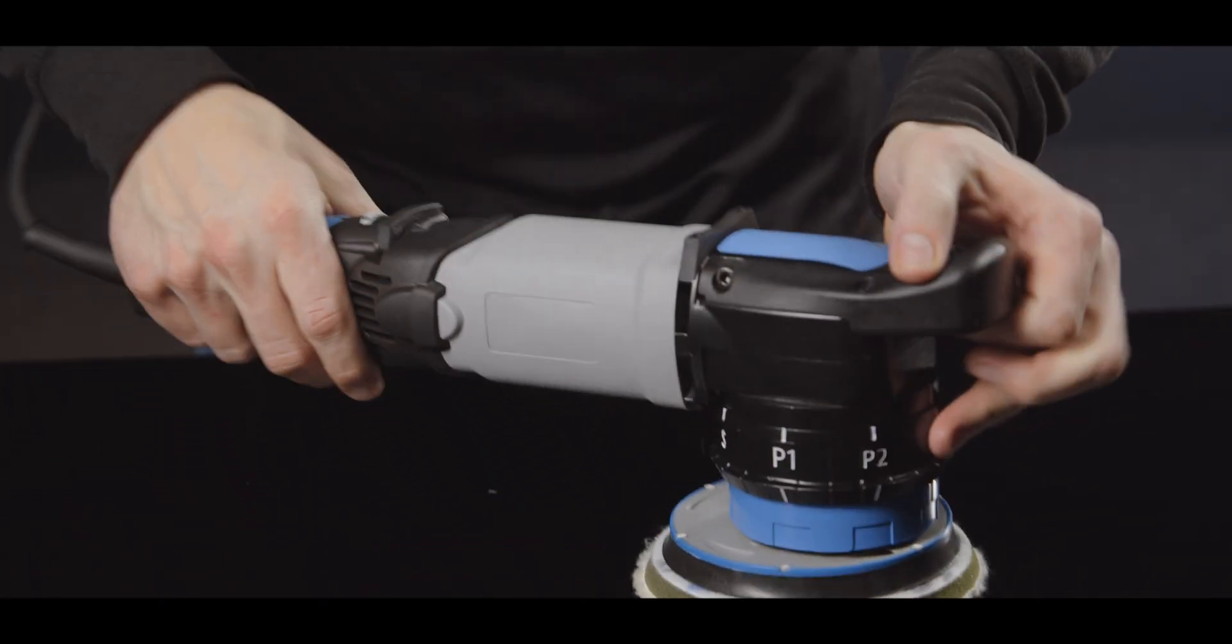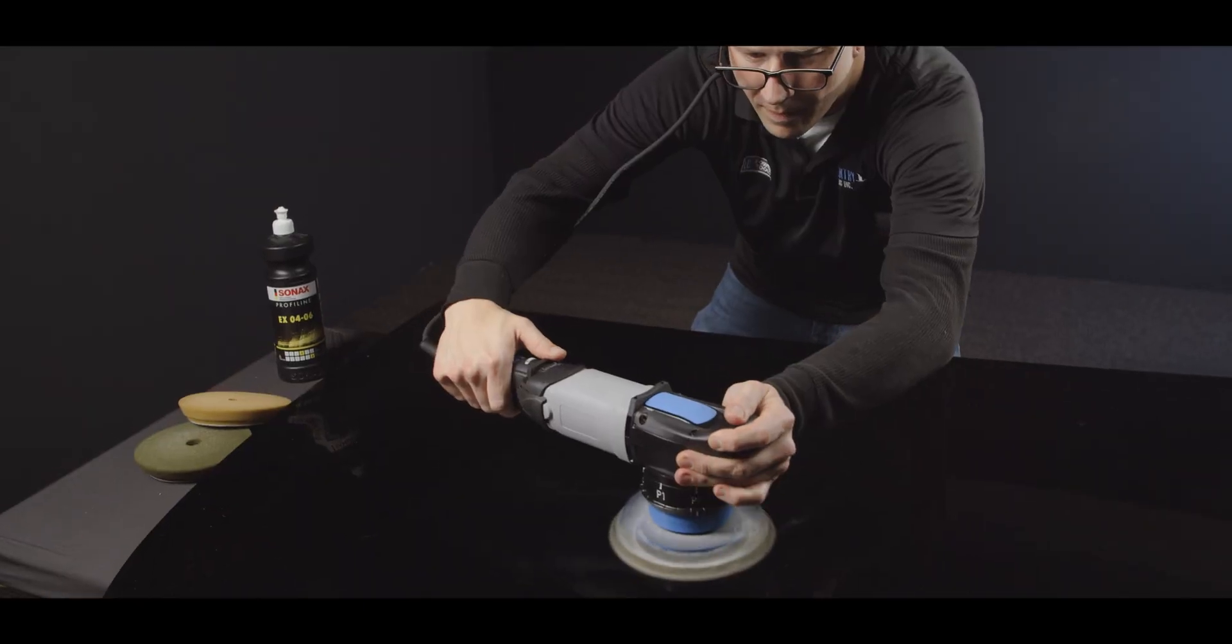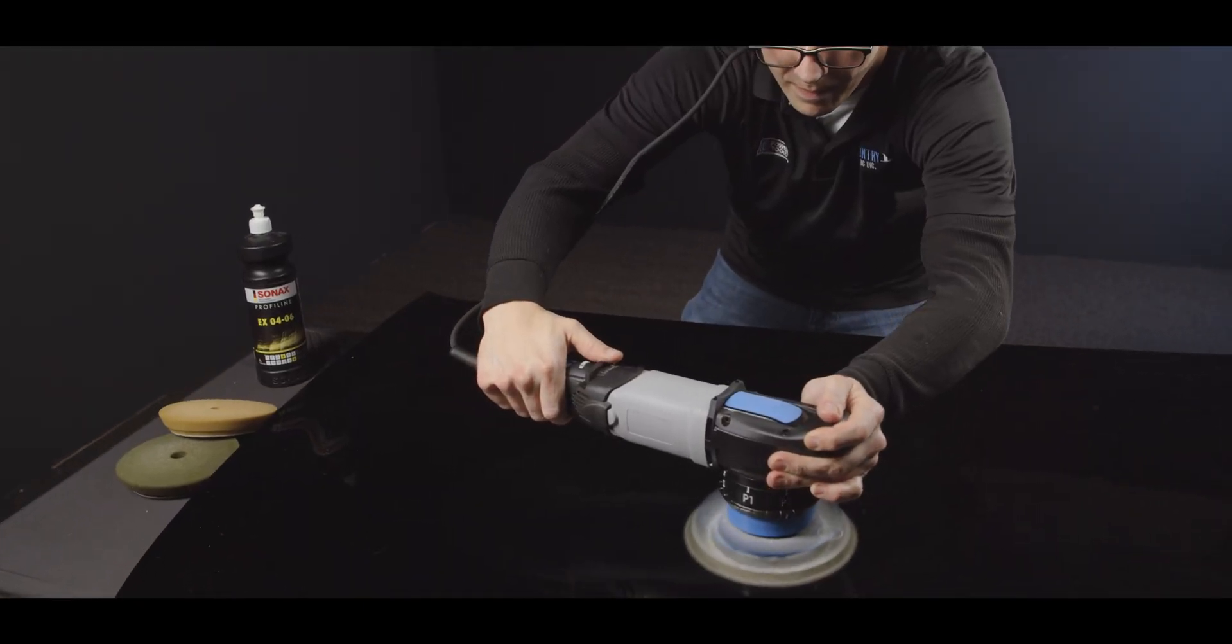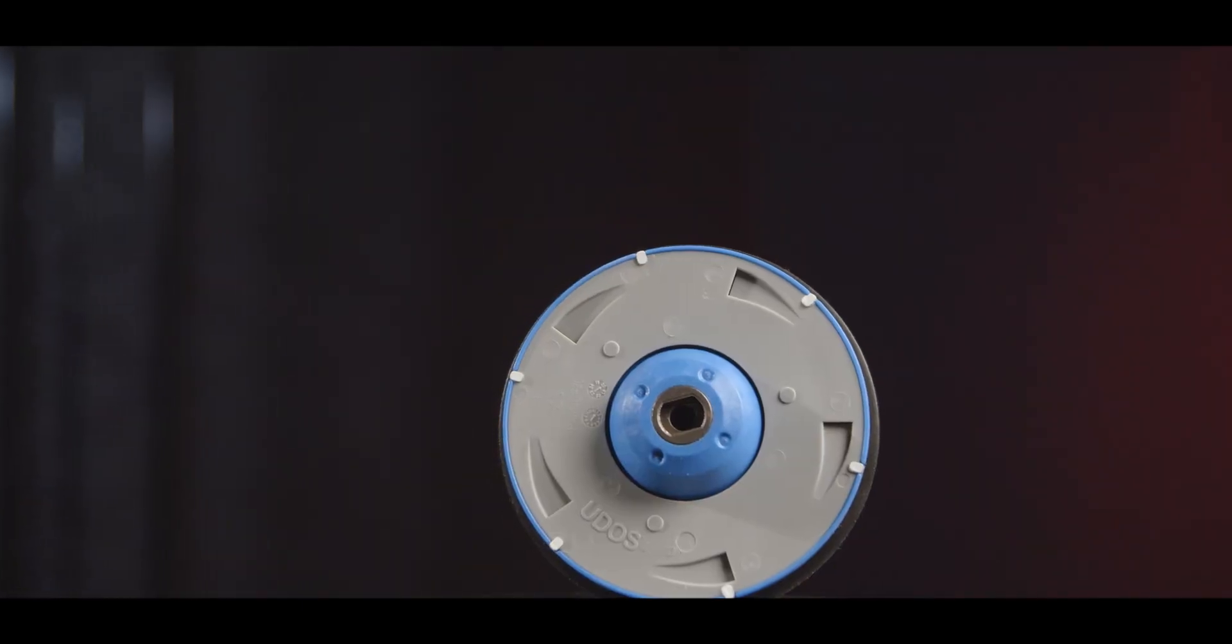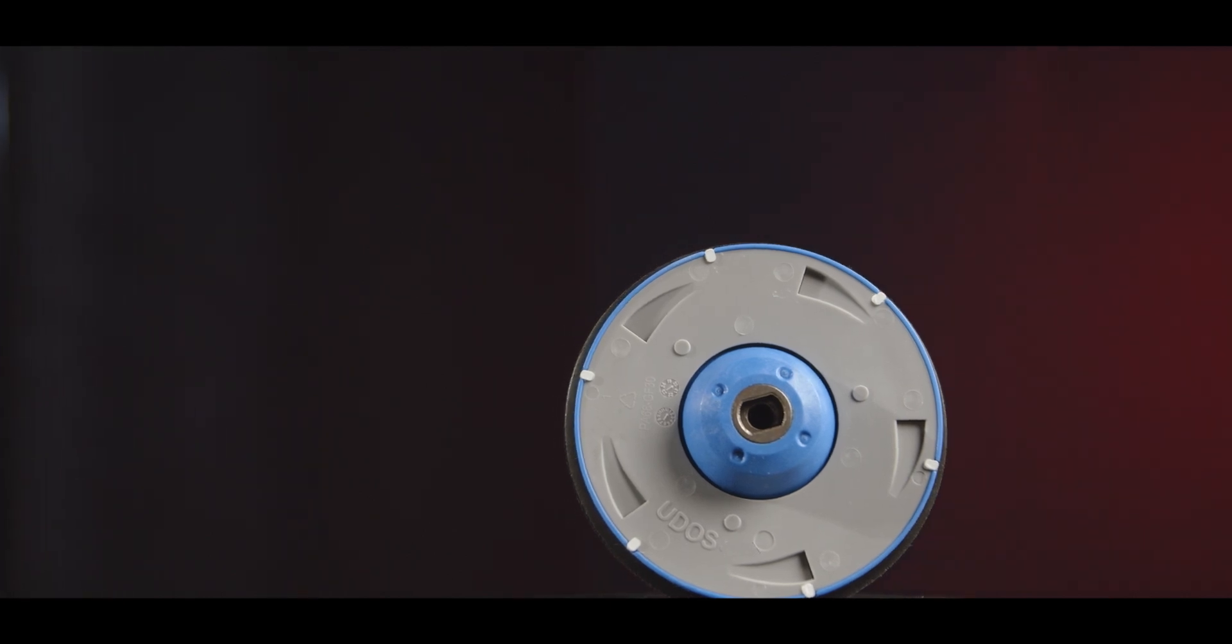The UDOS 51E machine has the most advanced dynamic balancing of any polisher on the market, but it's not just a balance of the tool. It's a balance or synergy of the system, and that includes the pads and the backing plate as well. The UDOS backing plate features laminar controlled pressure technology and is the most advanced technology in backing plates today.